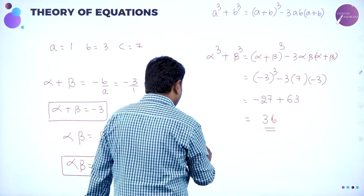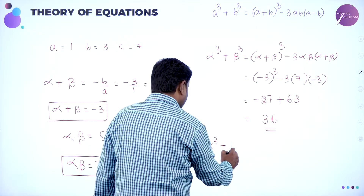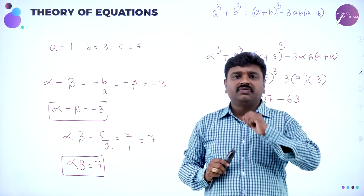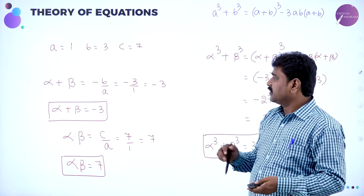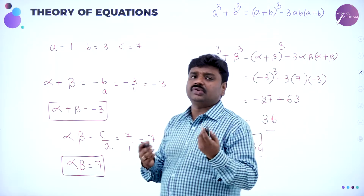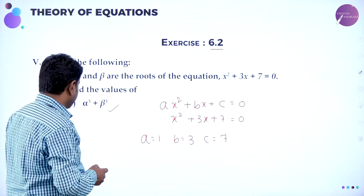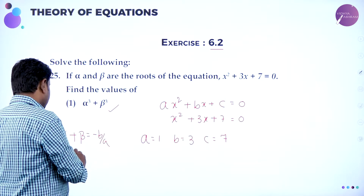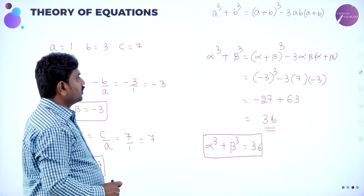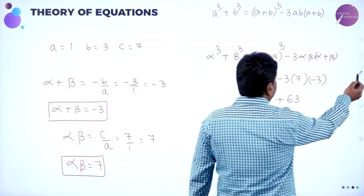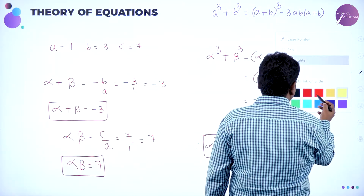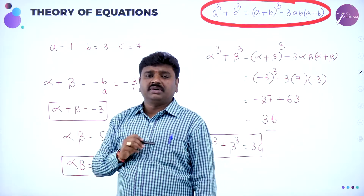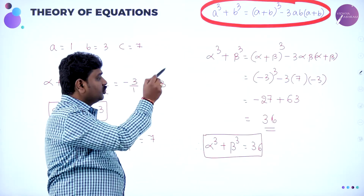Therefore alpha cube plus beta cube equals 36. In these kinds of problems, first you should know the formula for sum of the roots and product of the roots. Whenever a quadratic equation is given, it is not necessary to find the roots — directly use sum of roots formula: alpha plus beta equals minus B by A, and product of roots: alpha into beta equals C by A. You also need to know A cube plus B cube equals A plus B whole cube minus 3AB into A plus B.